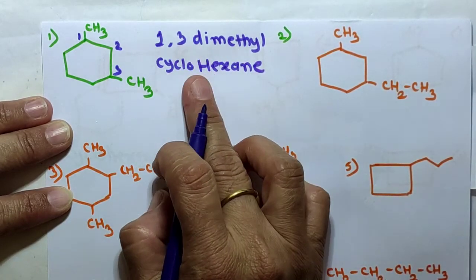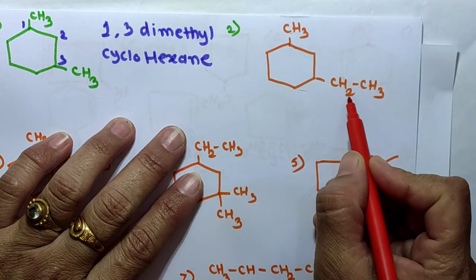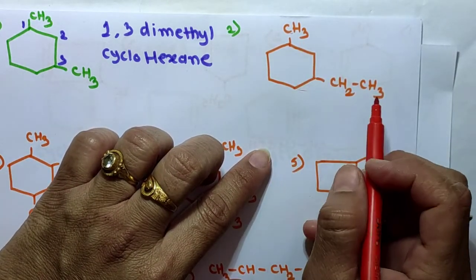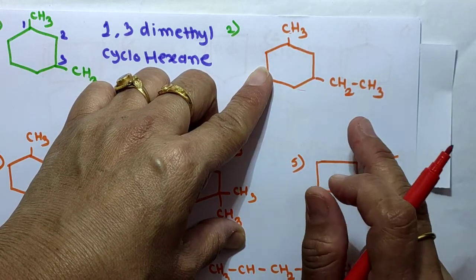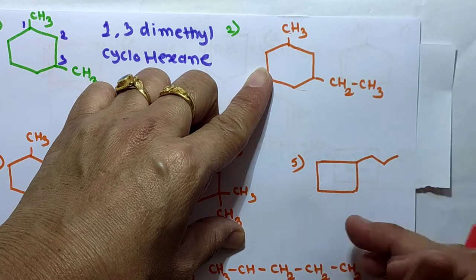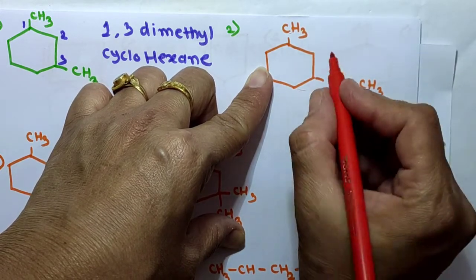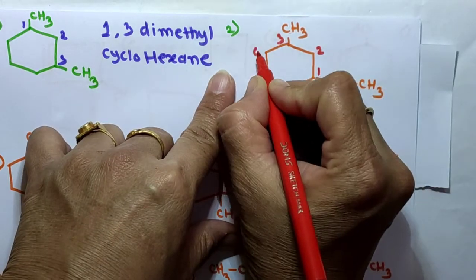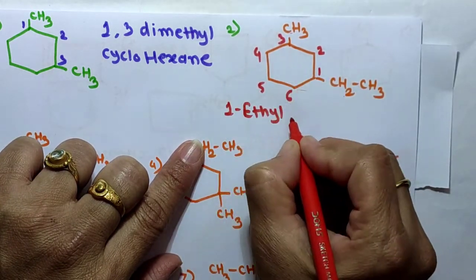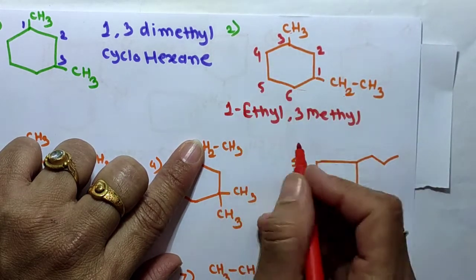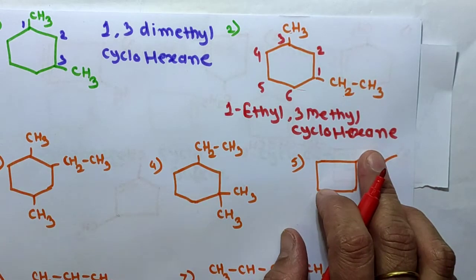The name of that compound is 1,3-dimethylcyclohexane. Next, take cyclohexane with a methyl substituent and an ethyl substituent attached. For numbering, we give the lowest possible number to whichever substituent comes first in alphabetical order. Alphabetically, ethyl comes before methyl, so we give ethyl the lowest possible number — position 1. Then: 1-ethyl, 3-methyl, cyclohexane, with prefix cyclo. The name is 1-ethyl-3-methylcyclohexane.